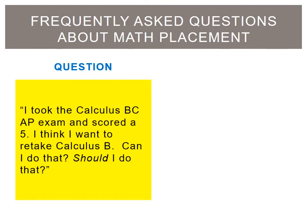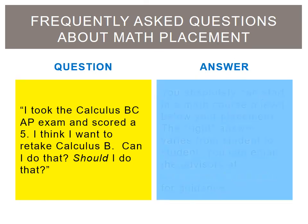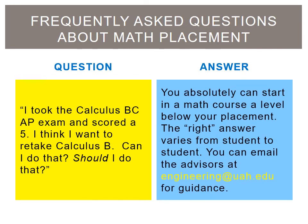I took the Calculus BC AP exam and scored a 5. I think I want to retake Calculus B. Can I do that? Should I do that? You absolutely can start in a math course a level below your placement. The right answer varies from student to student. You can email the advisors at engineering@uah.edu for guidance.